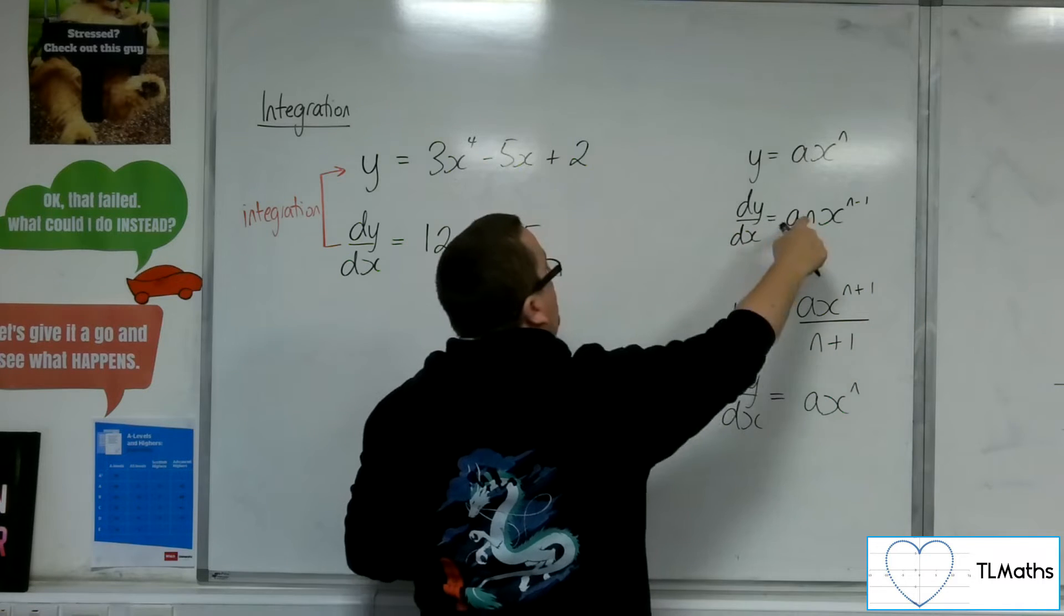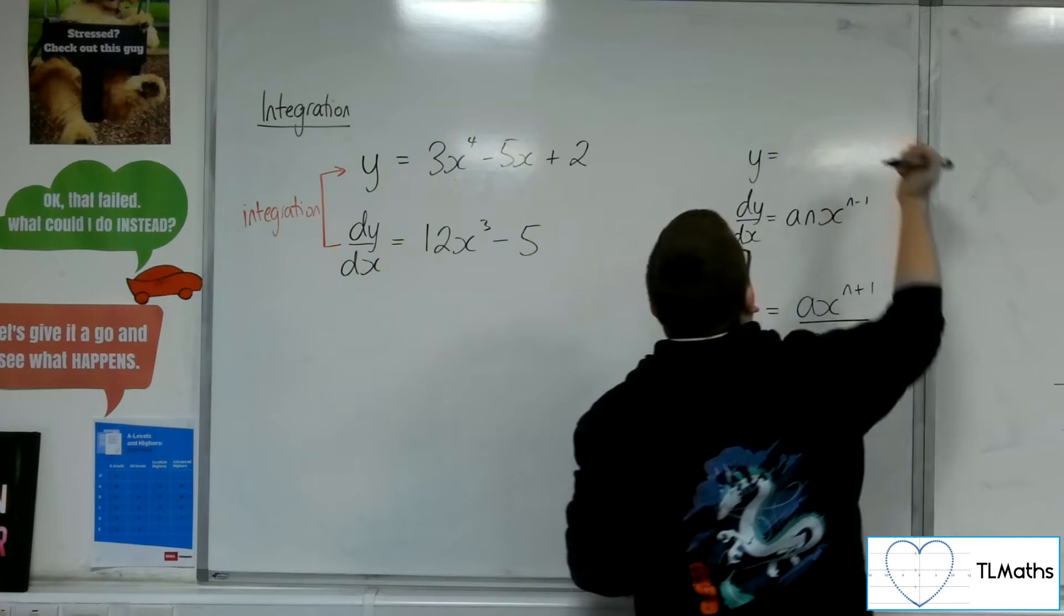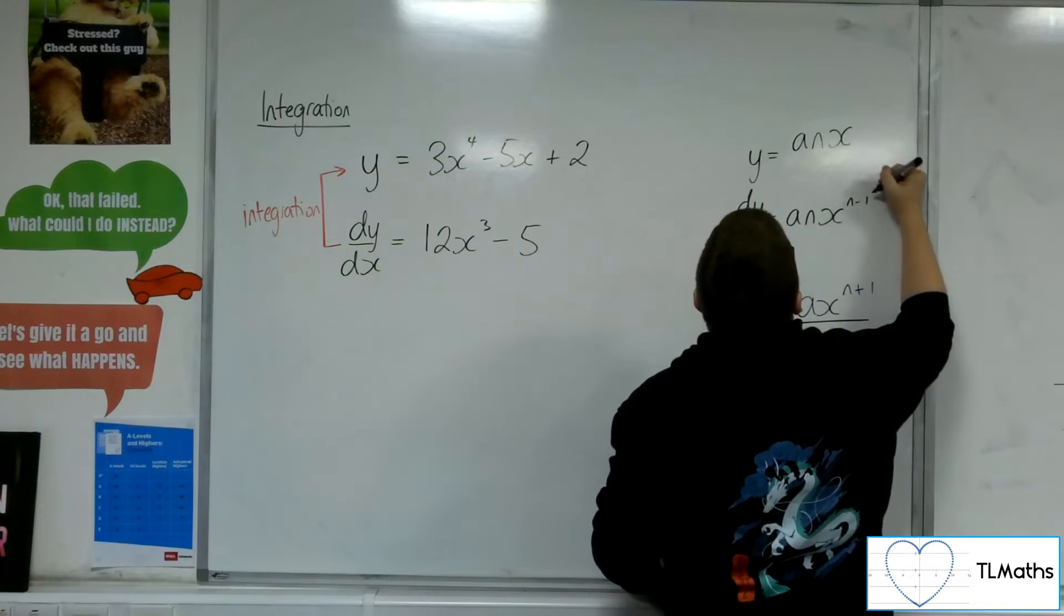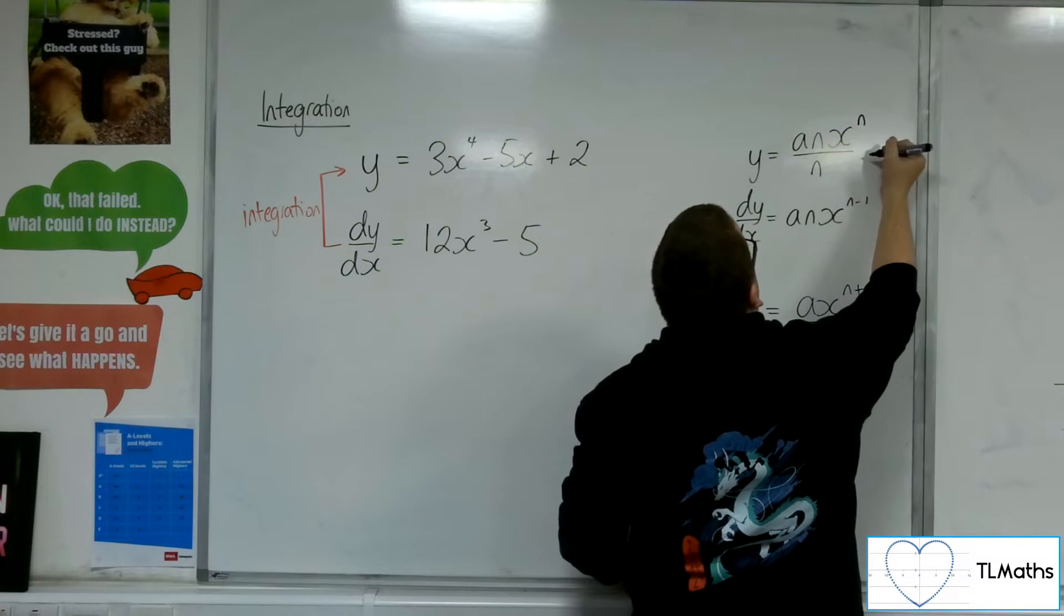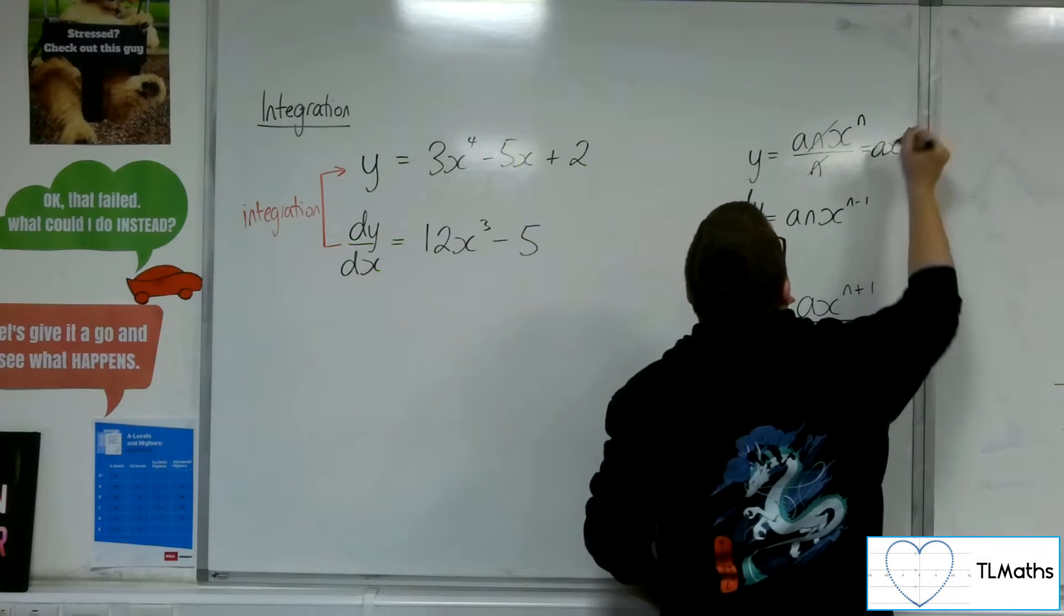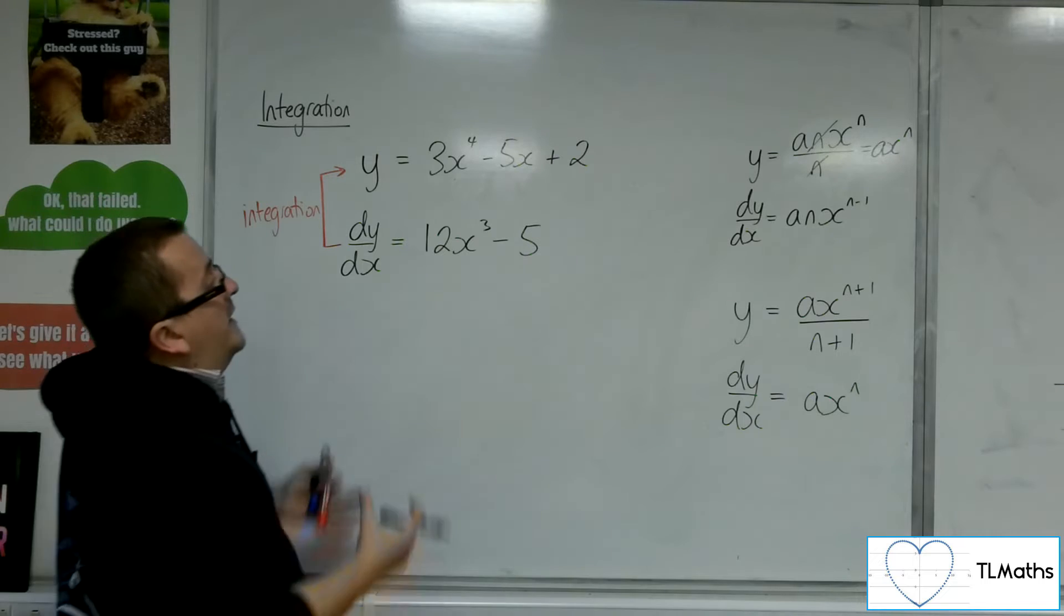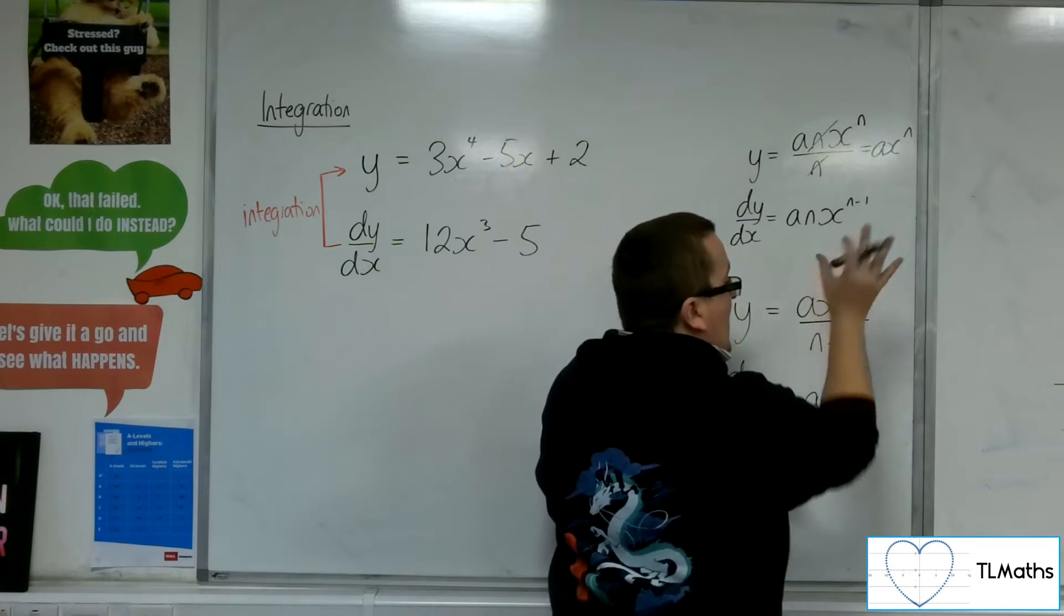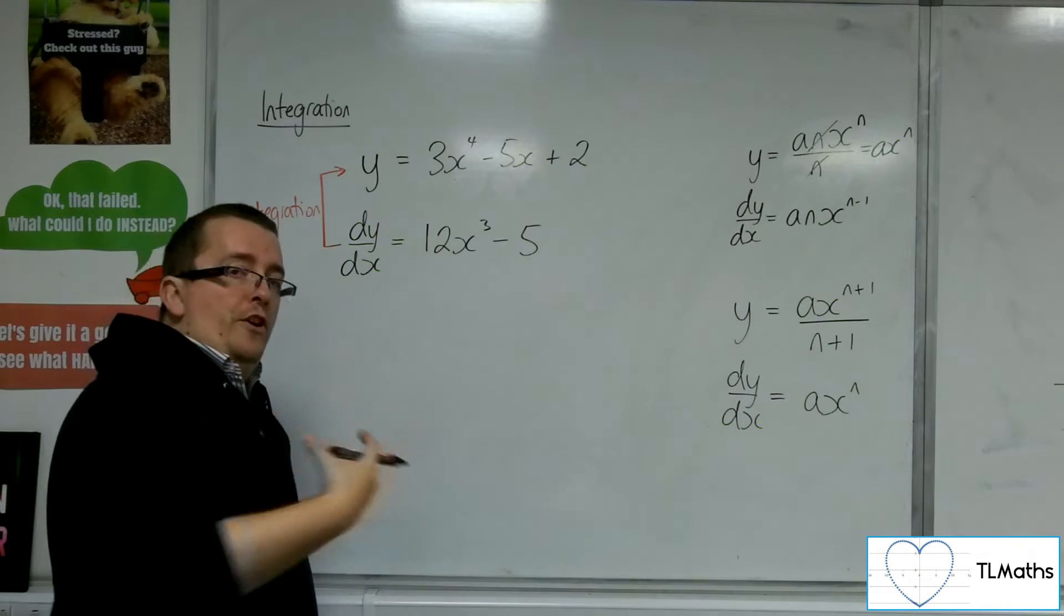If we see it happen here, right, if I've got the dy by dx equals anx to the n minus 1, then if I add 1 to the power, I get n minus 1 plus 1, which is just n. I divide by n. The n's there will cancel and I'll be left with the ax to the n that I started with. OK, so I can clearly see that that is the process I have to go through. I'm going to have to add 1 to the power and divide by the new power to reverse the process.